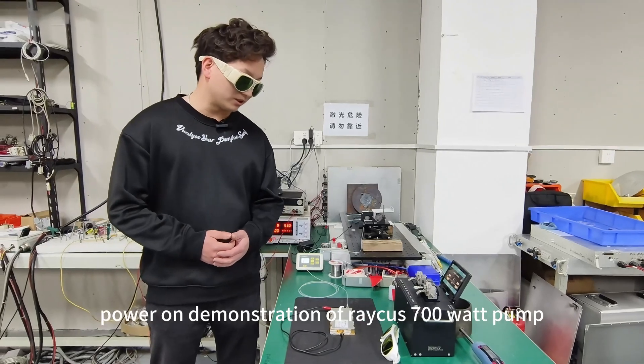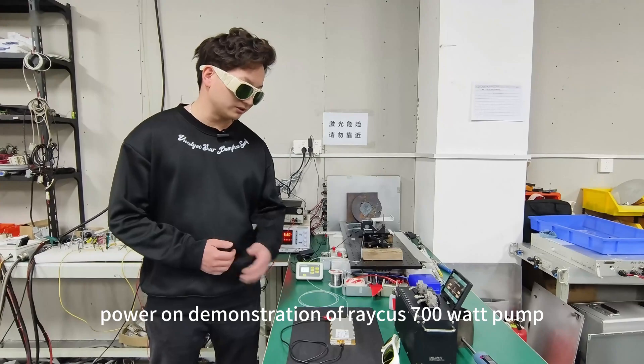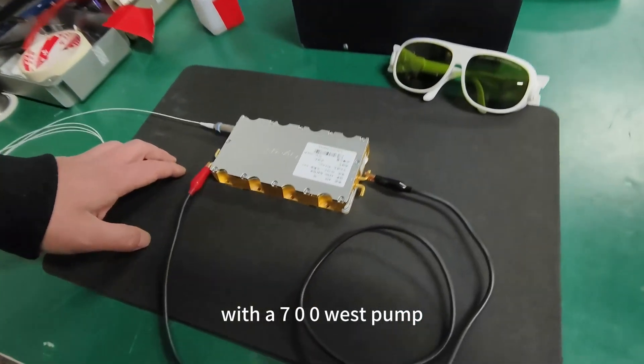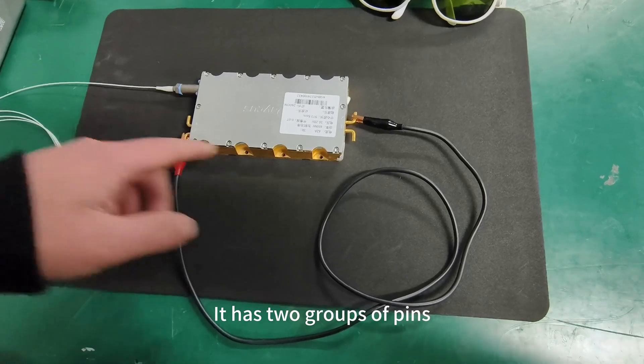Today I would like to introduce to you the power-on demonstration of Ricoh's 700 watt pump with a 70L West pump. It has two sets of silver horn.